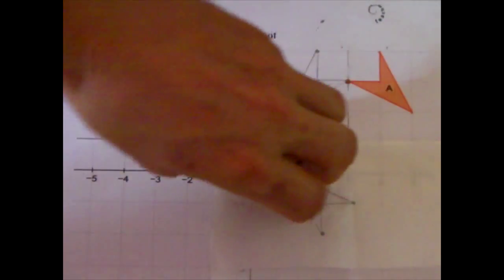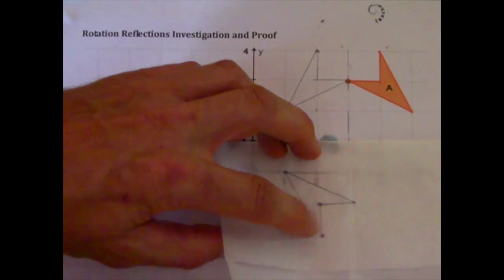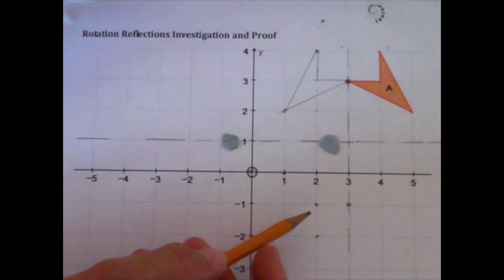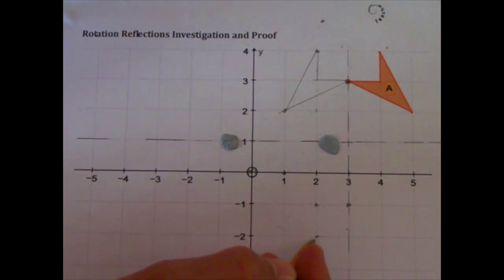Now we can see where that second image ends up. Lift up the paper, mark each of the corners like we did before, and then we just join the dots.